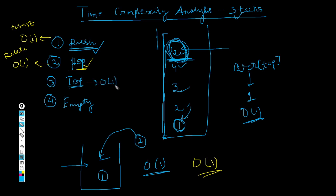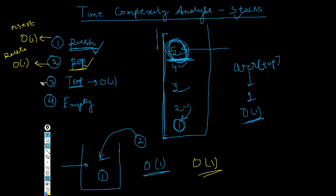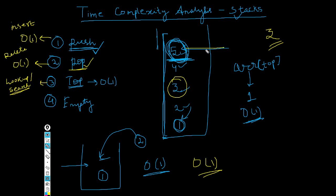You might be wondering — top being O(1) is fine, but in general what we're often asked about is the time complexity of lookup or search. Here is where things get a bit tricky for stacks. Suppose we have three in the stack and want to search whether it's present or not. There is no way to directly access three — we always need to use the top pointer to access elements in the stack.